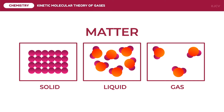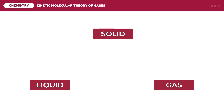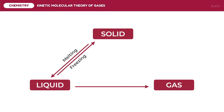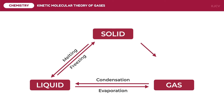Another evidence that can prove that matter has energy is the energy changes happening during phase changes. Solids are transformed into liquids through the process of melting. Liquids are transformed into solids through the process of freezing. Liquids are transformed into gases through the process of evaporation. Gases are transformed into liquids through the process of condensation. Solids are transformed into gases through the process of sublimation. Lastly, gases are transformed into solids through the process of deposition.